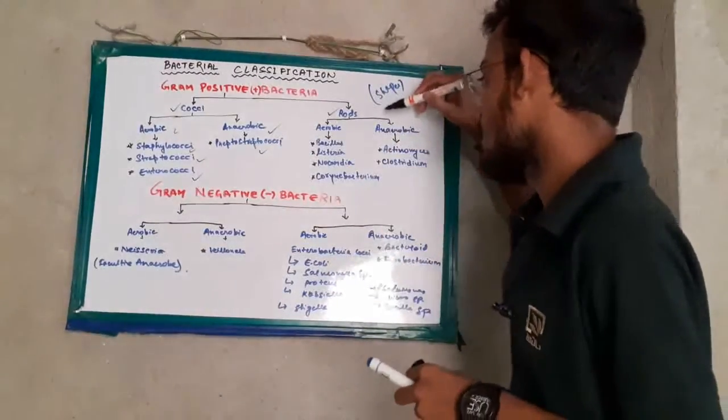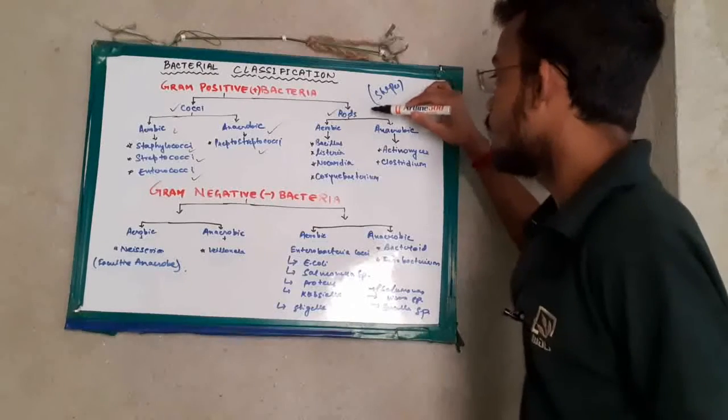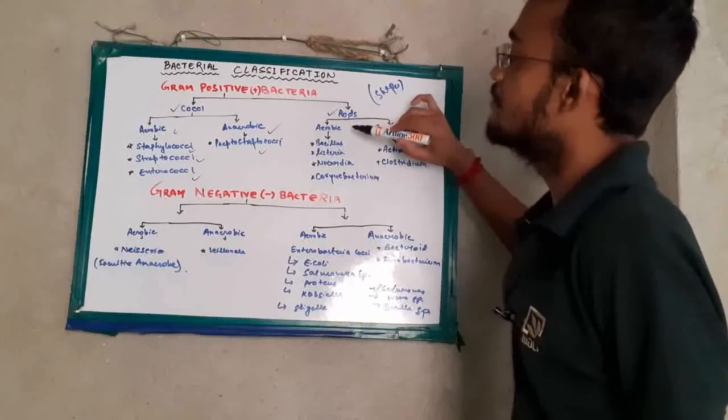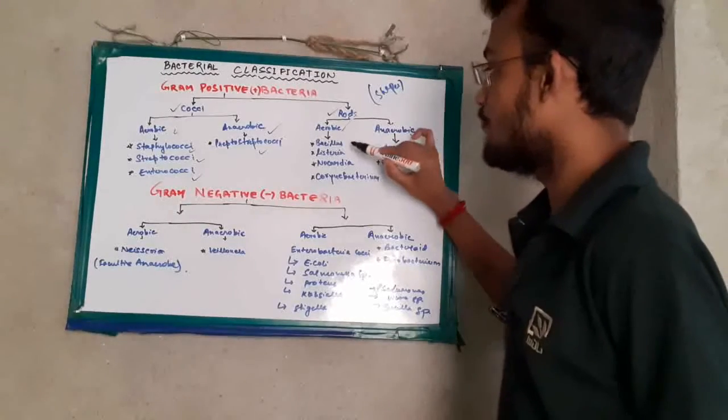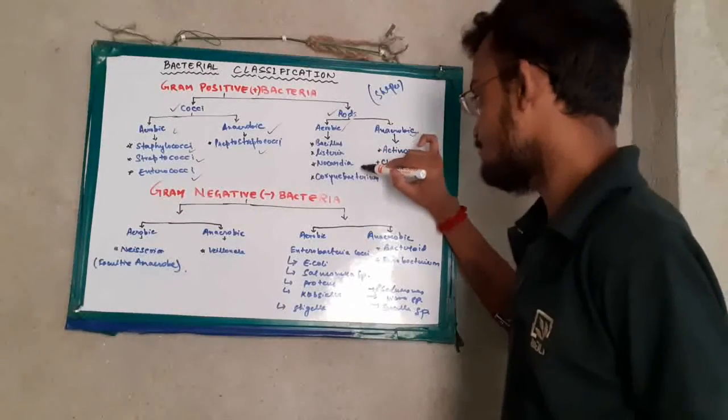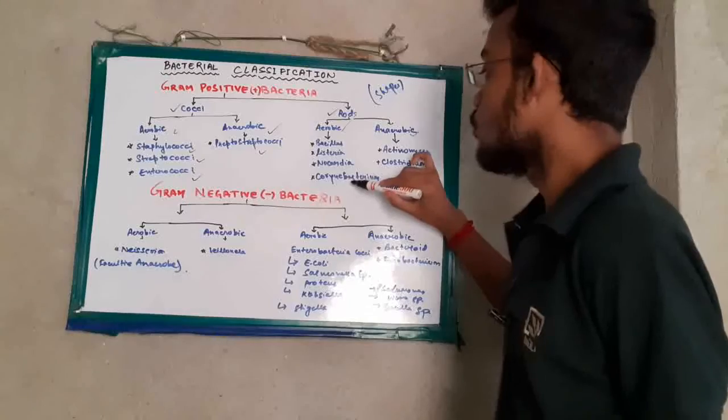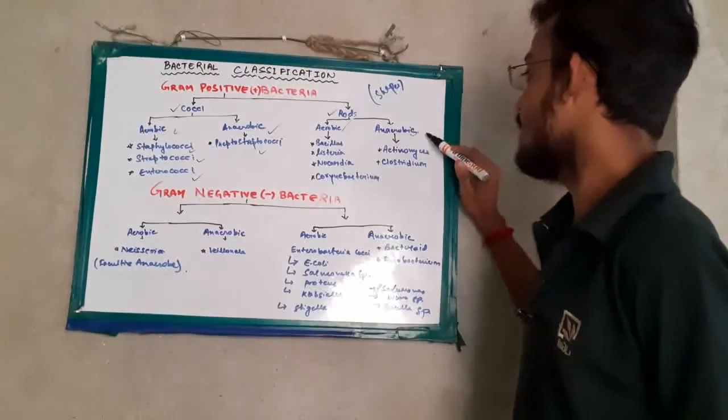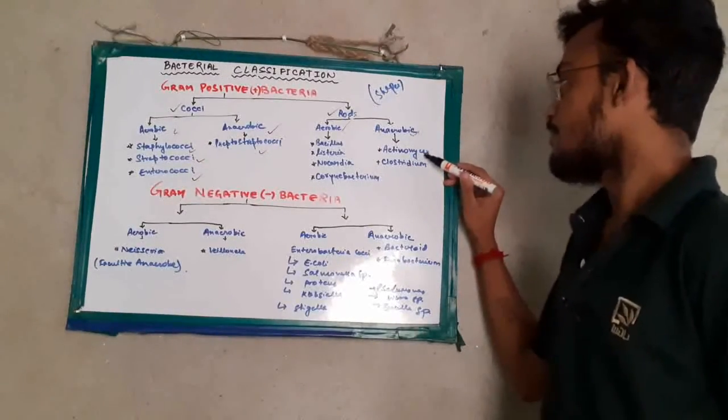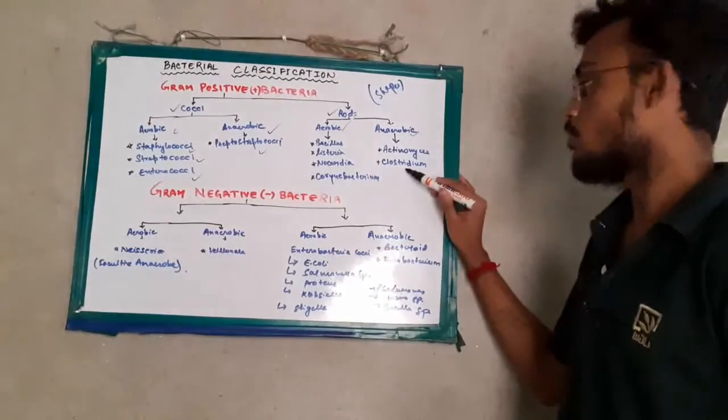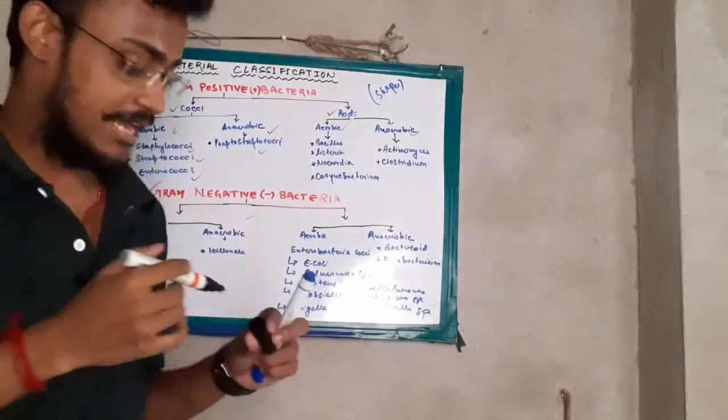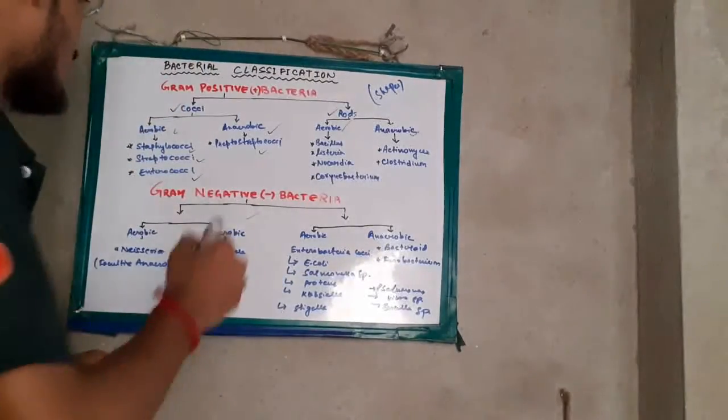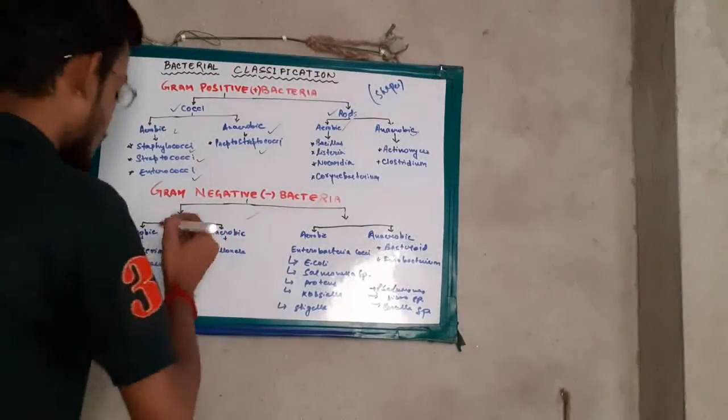Now came in rods. In rods, it is also classified in aerobic and anaerobic. In aerobic we have Bacillus, Listeria, Nocardia, Corynebacterium. In anaerobic we have Acetomyces, Clostridium. Now claiming gram-negative bacteria, gram-negative bacteria is further classified on the basis of shape.